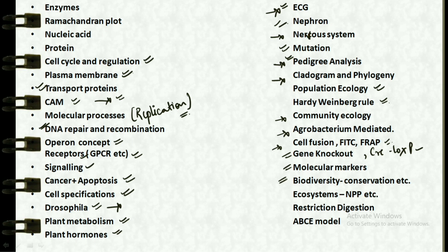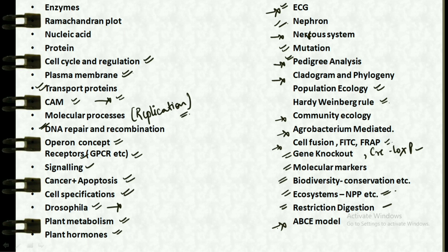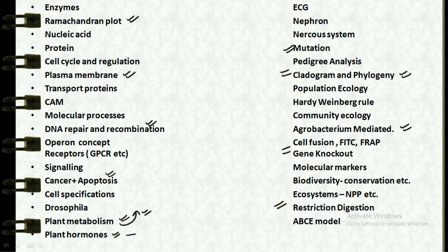Biodiversity is also very important — all subtopics including conservation strategies, various conservation methods, and protection from various threats are important. Then we have ecosystem, covering the basics of energy flow and the NPP concept (net primary productivity), which is frequently repeated. Next is restriction digestion, from which you can easily find a Part C question, and finally the ABCE model, which is very important and easy to complete.